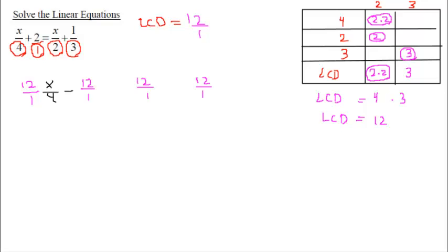So the first term we have 12 over 1 times x over 4, 12 over 1 times 2 over 1 equal to LCD times the next term x over 2 plus and finally multiply the LCD by the last term. By doing that you can eliminate the fraction.